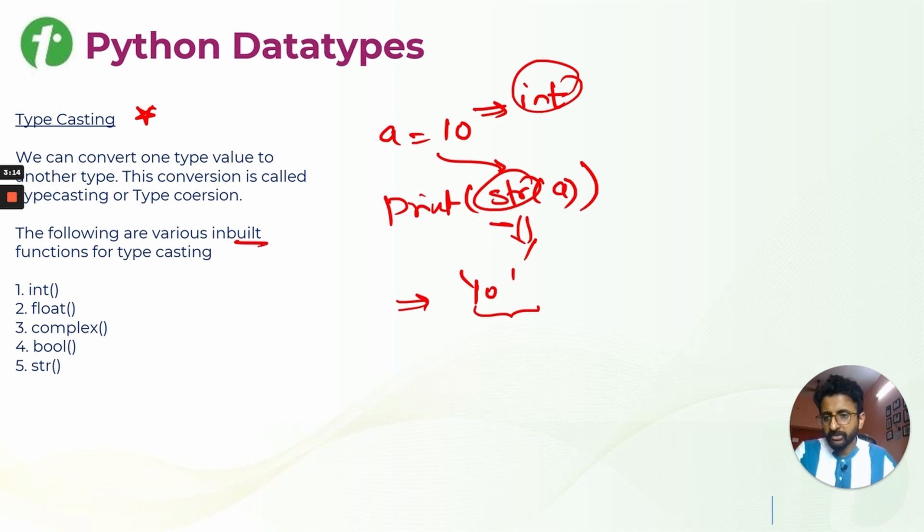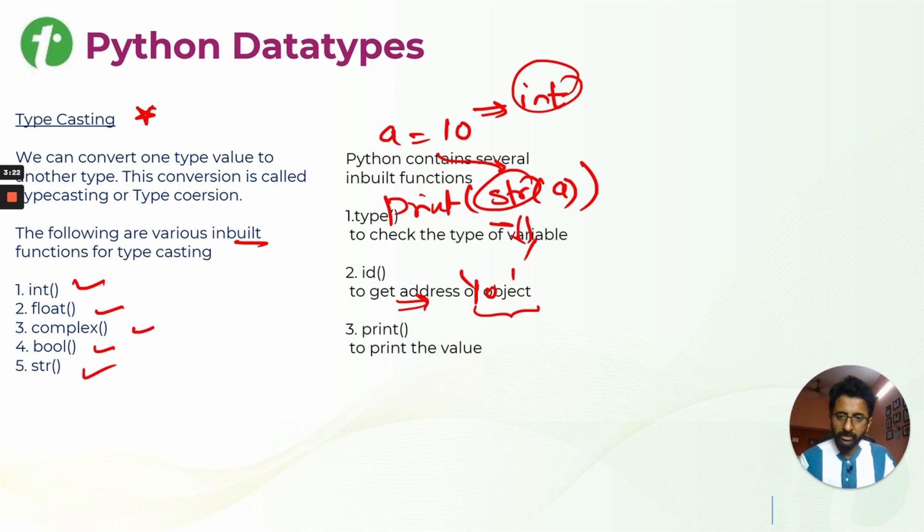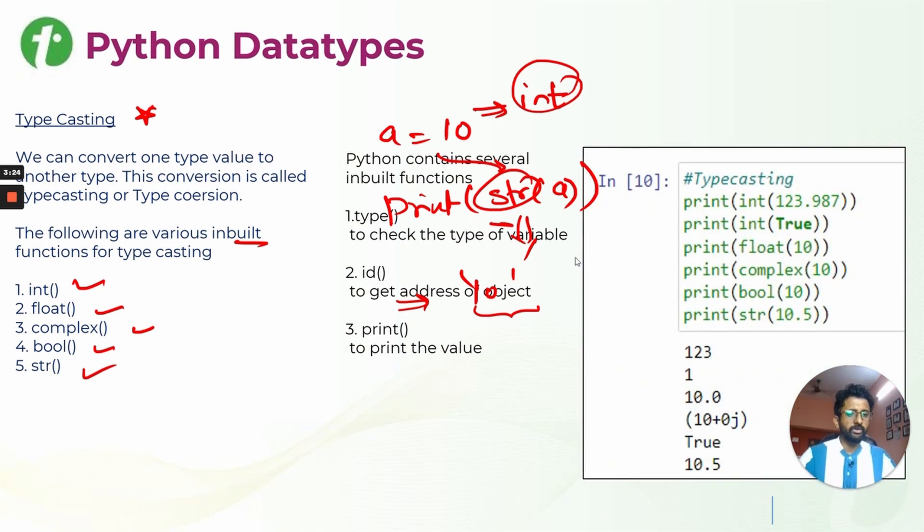There are different inbuilt functions in type casting that we can use: int, float, complex, boolean, and str. We will see those examples one by one. These three functions we have already seen.